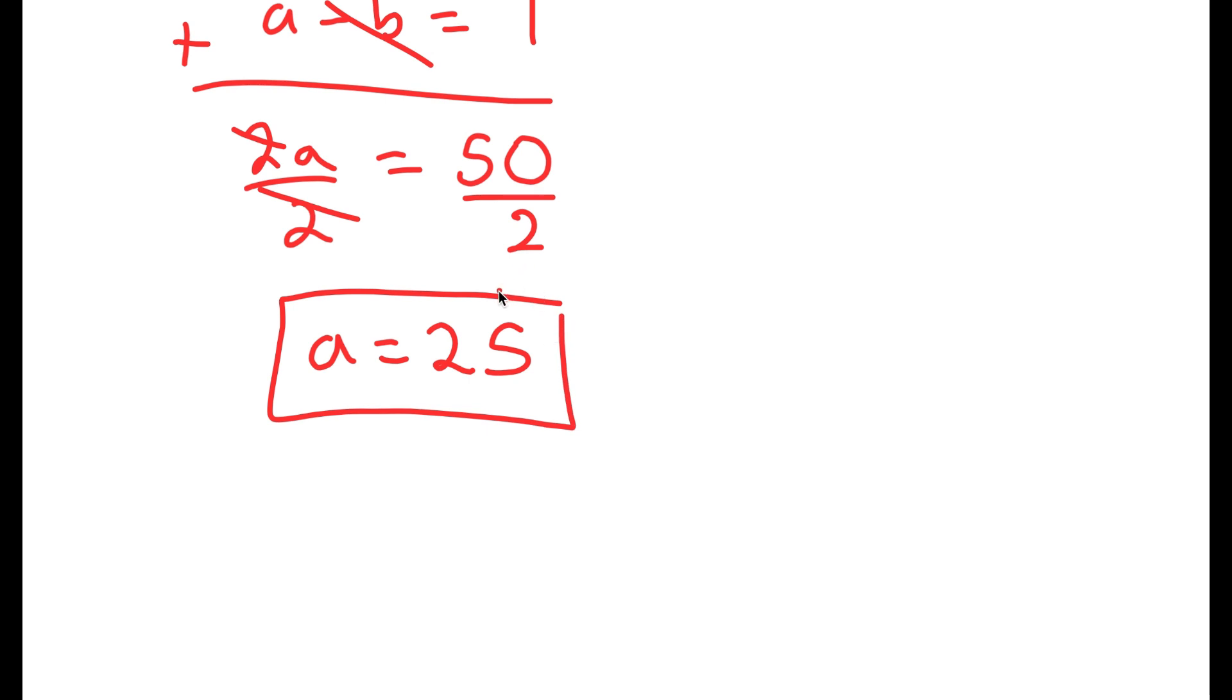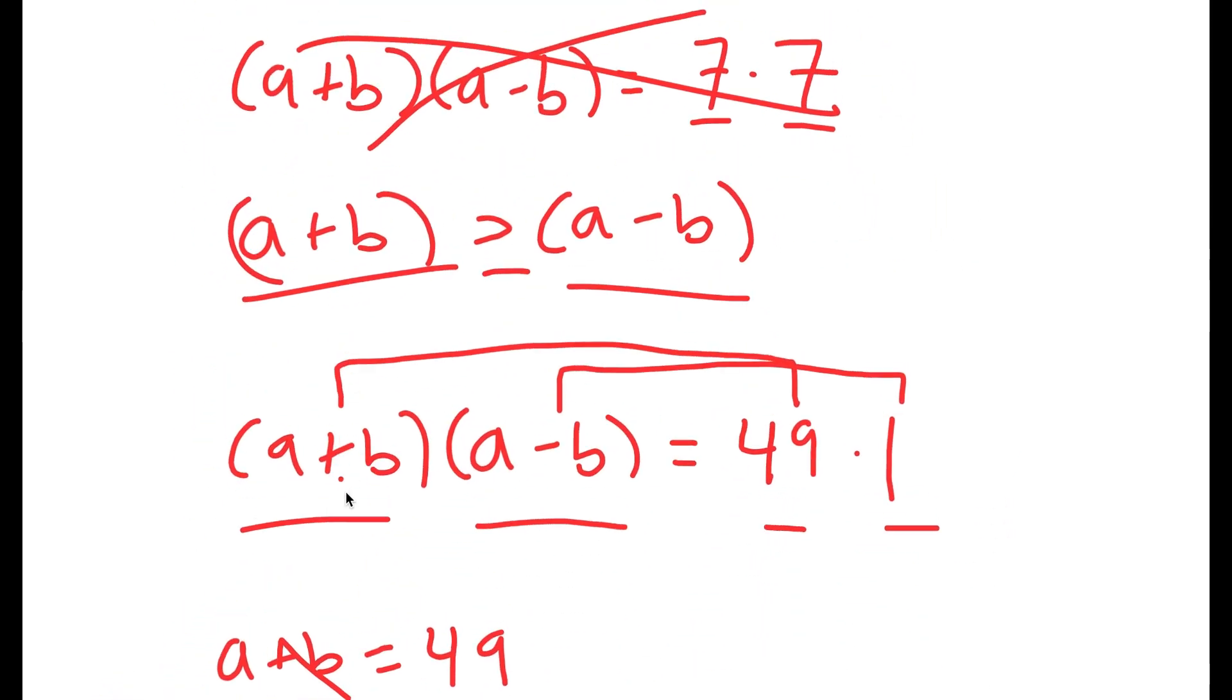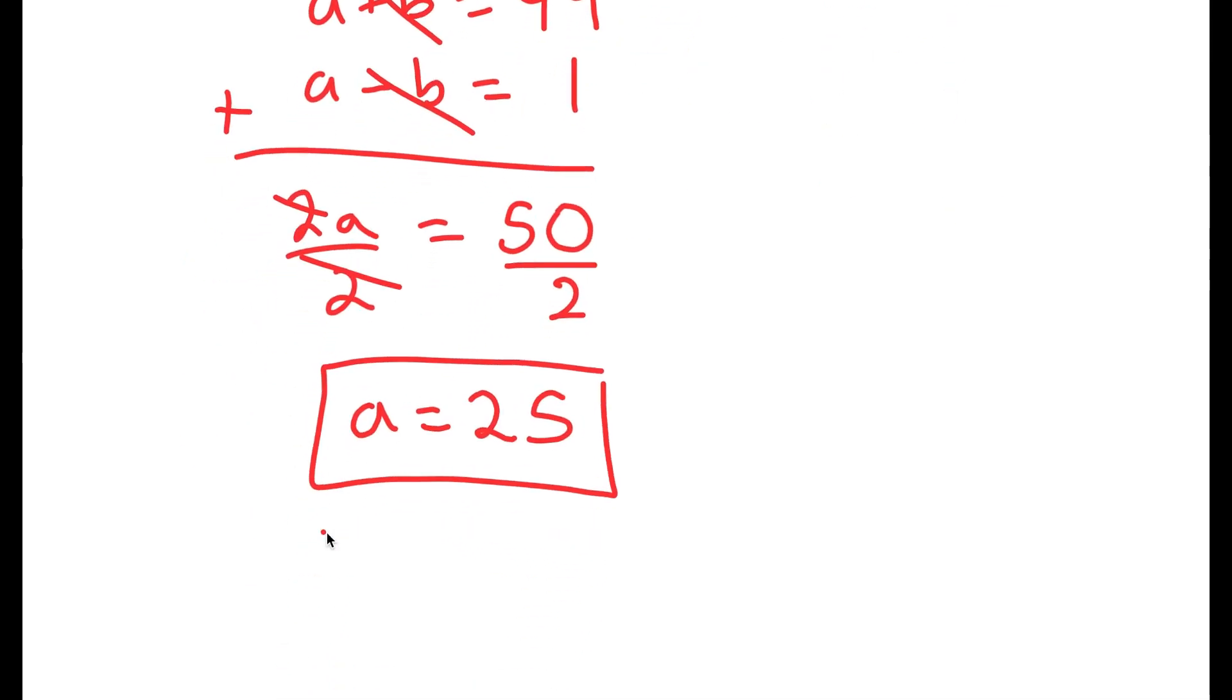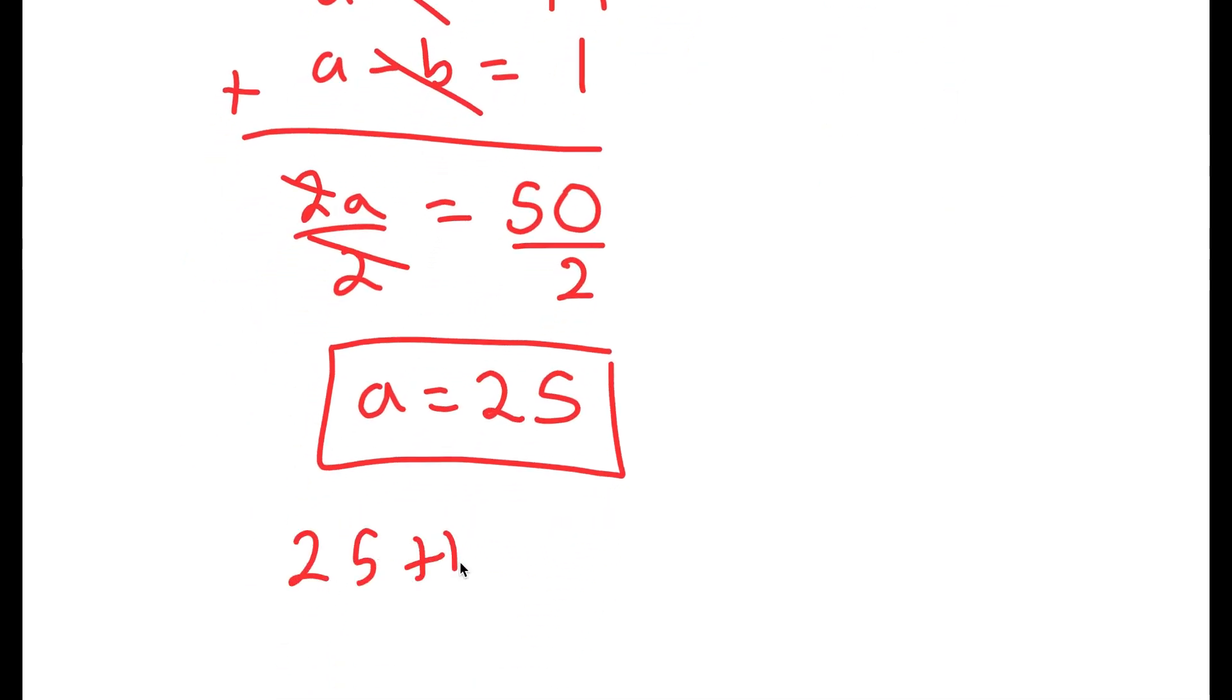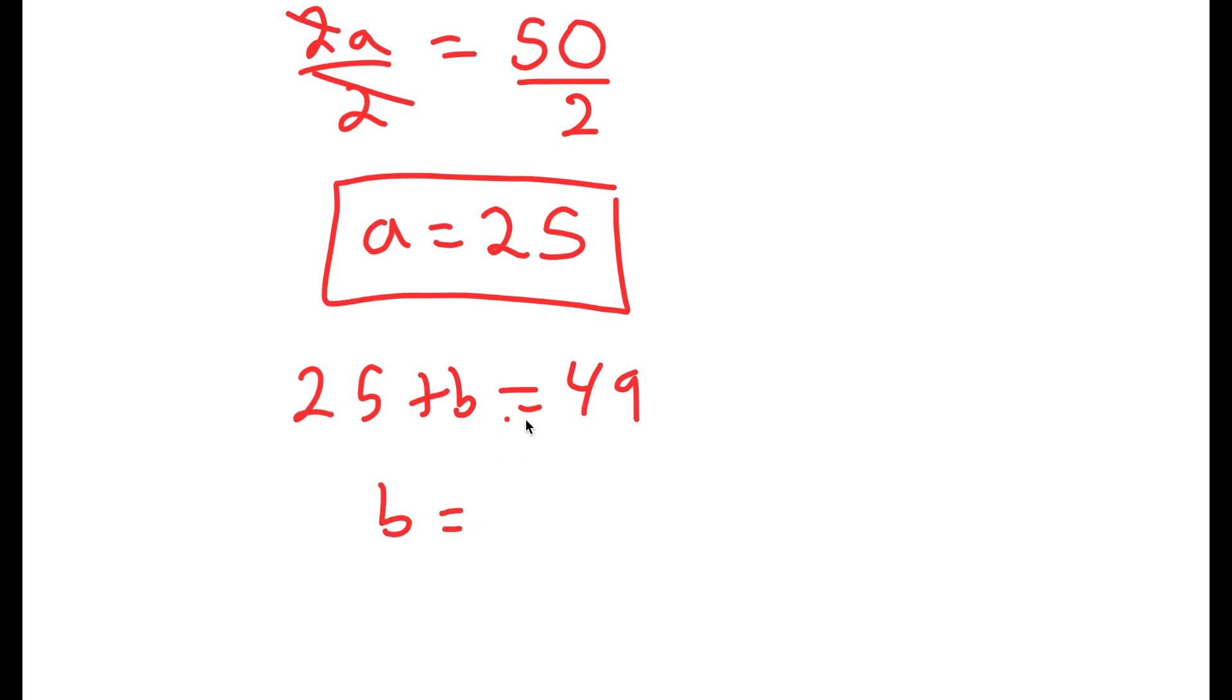Now that we know that a equals 25, remember how we said that a plus b equals 49. So this means that 25 plus b equals 49 and b equals 49 minus 25, which is 24. So a equals 25 and b equals 24.